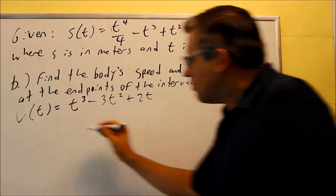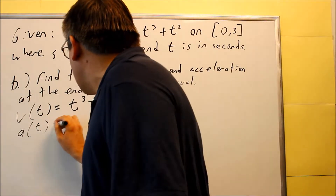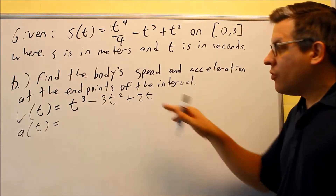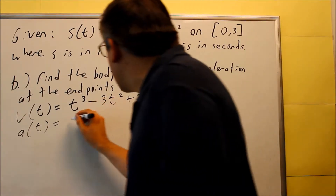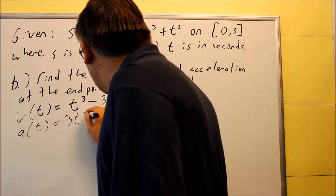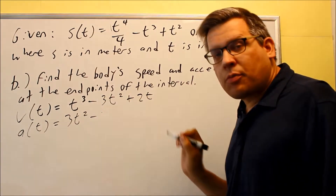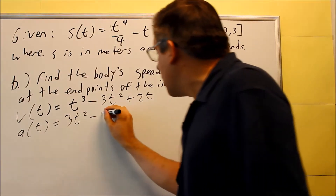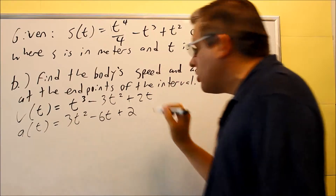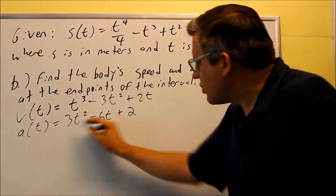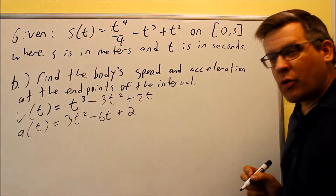Next, we're going to find the acceleration. Acceleration is the derivative of velocity. Using the power rule: three comes down giving 3t squared; the two comes down and multiplies by the three giving minus six t; and the last term gives plus two. So the acceleration function is a(t) = 3t² − 6t + 2.